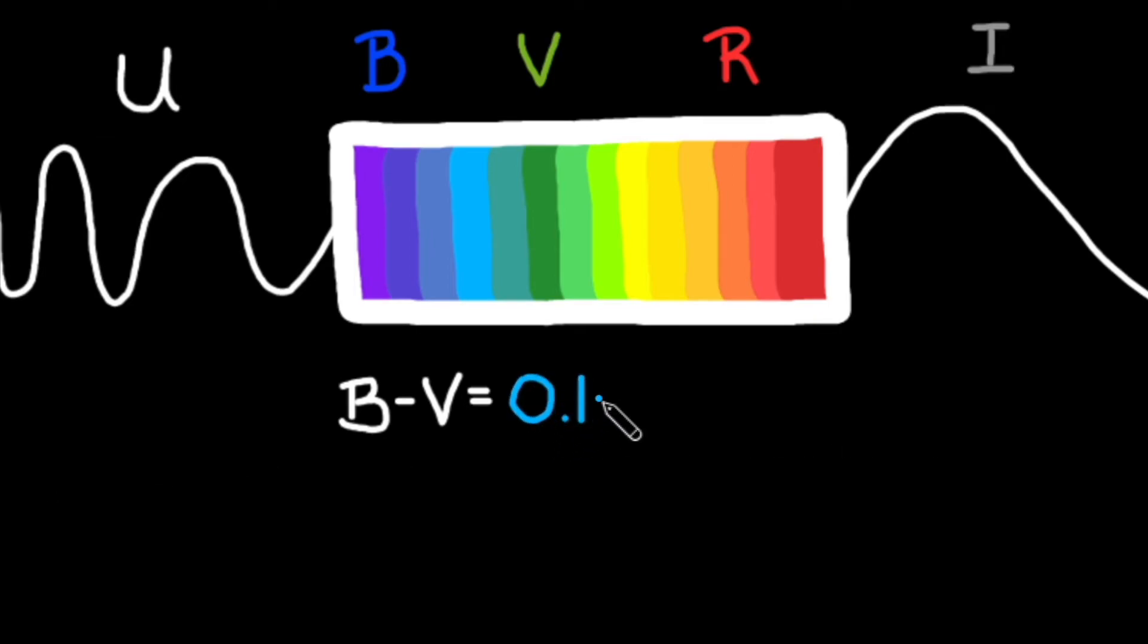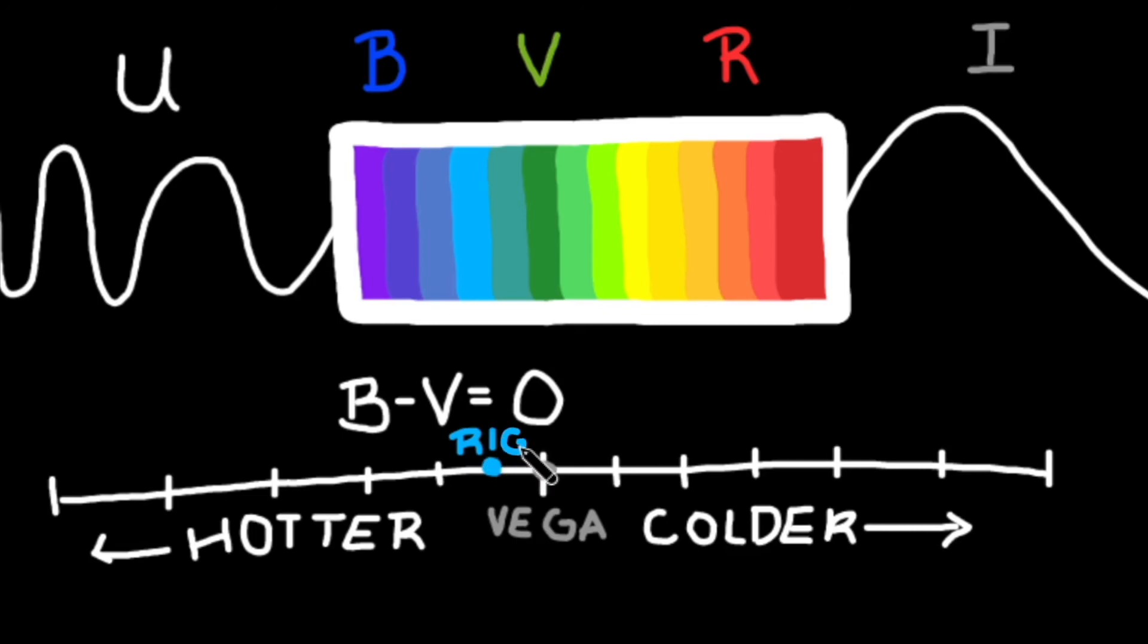The star Rigel has a B magnitude of 0.1 and a V magnitude of 0.13. We can analyze Rigel's color by taking the difference of these two filters. The B minus V value is negative 0.03. Because this value is negative, we can say Rigel is hotter than the star Vega.